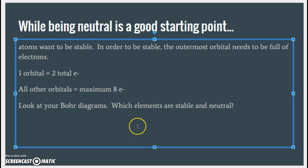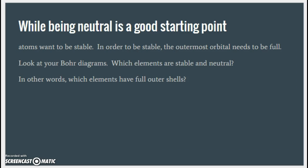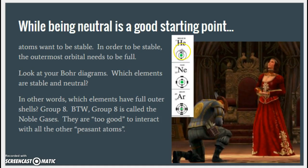So look at your Bohr diagrams. Which elements are already stable and neutral — meaning their outermost orbital is already full of electrons? Which elements have a full outer shell? The word shell and orbital are interchangeable. The answer is group eight — all of them have full outer shells.